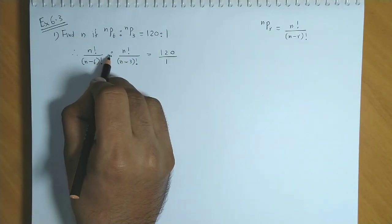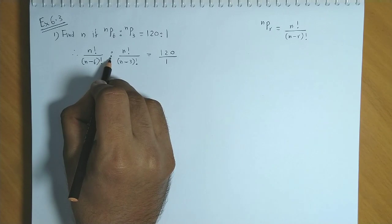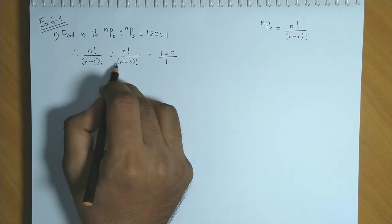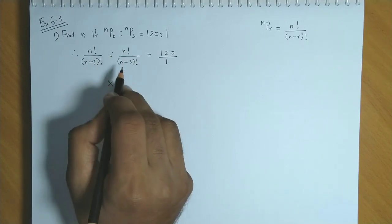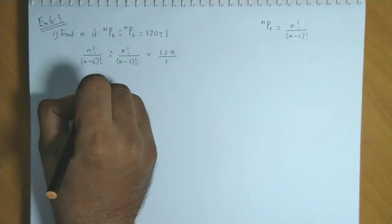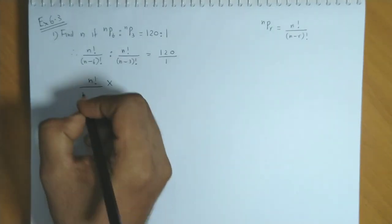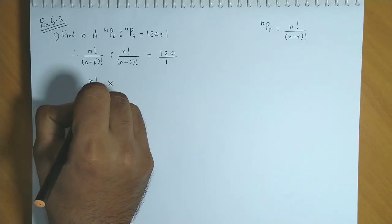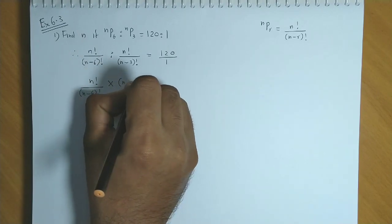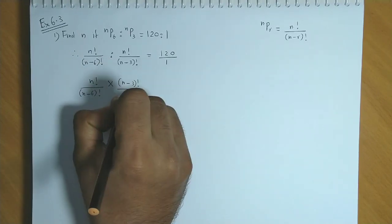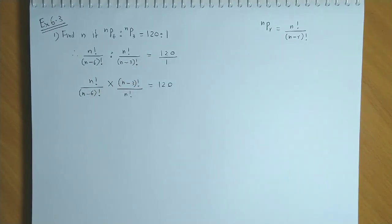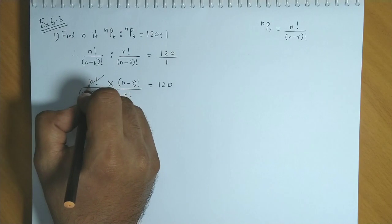This ratio sign could be considered like division. If we use multiplication, we have n factorial upon n minus 6 factorial into n minus 3 factorial upon n factorial, which is equal to 120.